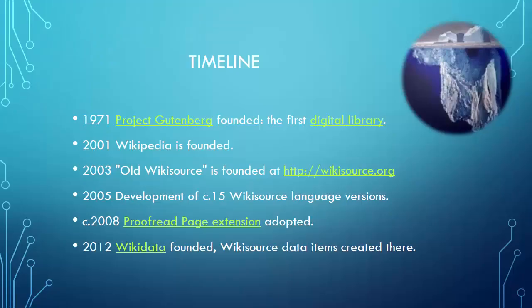Just a brief timeline to set the context. Project Gutenberg obviously started with the digitization of the U.S. Declaration of Independence. Thirty years later, Wikipedia came along, and people were putting longer texts onto Wikipedia. We needed a suitable home for those longer texts, so Wikisource came about. Then in 2005, about 15 different language versions of Wikisource were developed, and we had the English language version at en.wikisource. And then roughly in 2008, the Proofread Page extension came along.